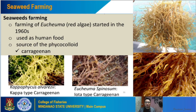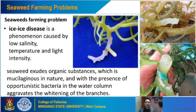Seaweed farming in the Philippines has encountered problems including ice-ice disease. Ice-ice disease is a phenomenon caused by low salinity, low temperature, and low light intensity. When salinity is low due to freshwater intrusion, during prolonged rainy seasons, or when seaweeds are not exposed to sufficient sunlight due to shading or typhoons, there is a higher tendency for the seaweeds to experience ice-ice disease.